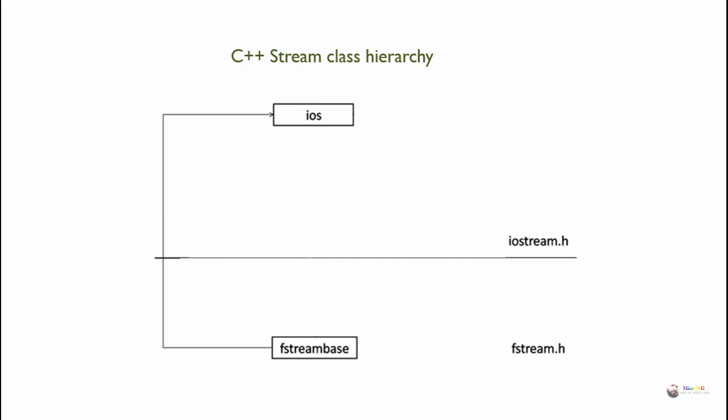fstreambase is a base class of file stream classes and is derived from ios.h. For performing primitive file handling operations in the stream class, there is a class named streambuf, which is also derived from ios.h. Similarly, for primitive operations in fstream, there is filebuf, which is derived from the streambuf class.